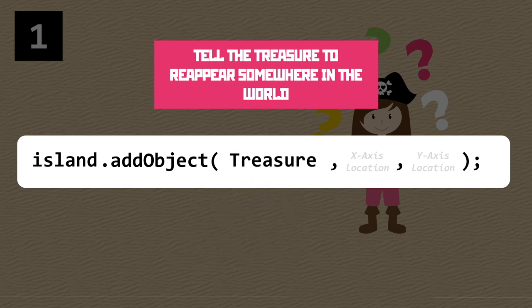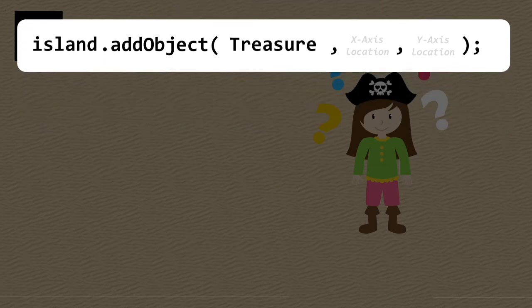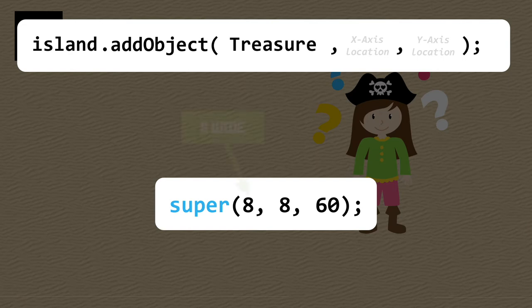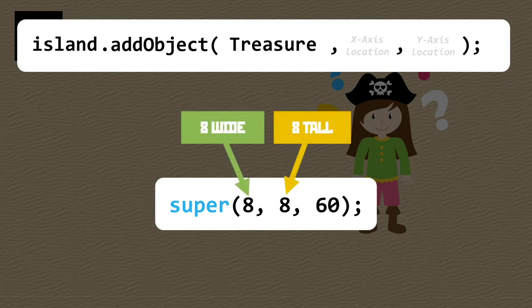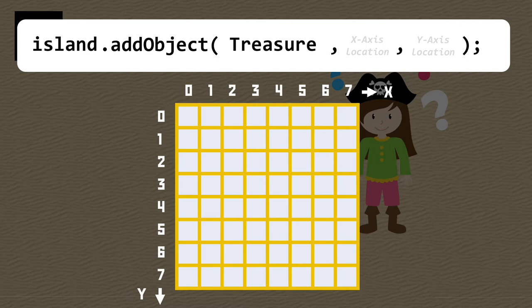Last but not least, we need the x and y axis locations where we want the treasure to respawn. This should be random — it's not much of a game if the thing we're trying to collect keeps appearing in the same spot. Let's go back to the code we used to build this world. We said it should be an eight by eight grid, meaning eight cells wide and eight cells tall. The grid is zero-indexed: the first location is zero, so with eight cells it starts at zero and ends at seven.